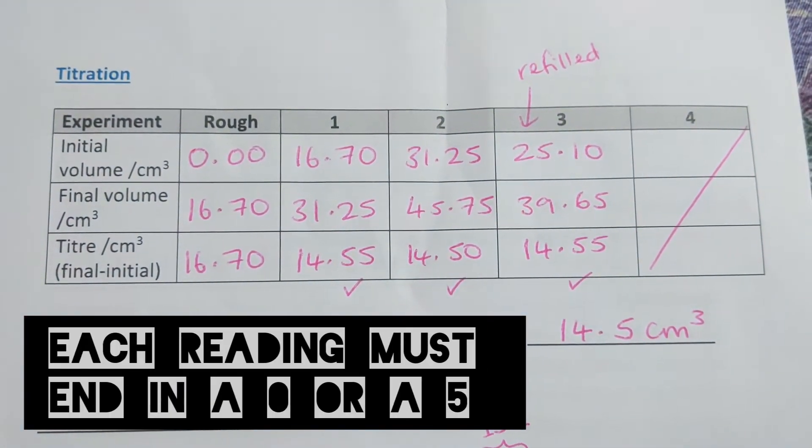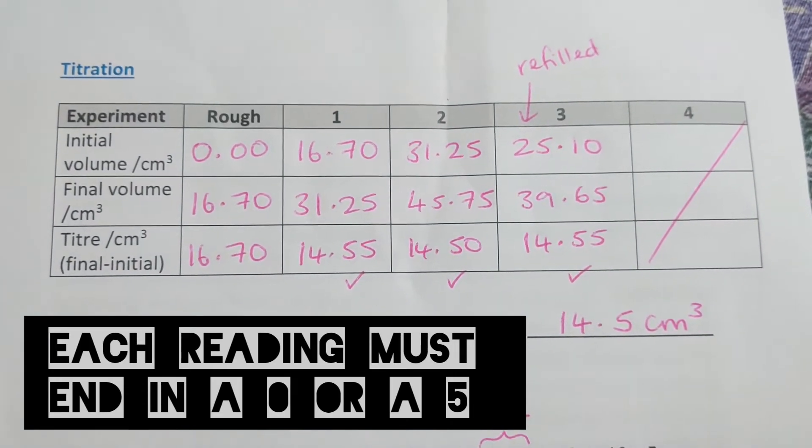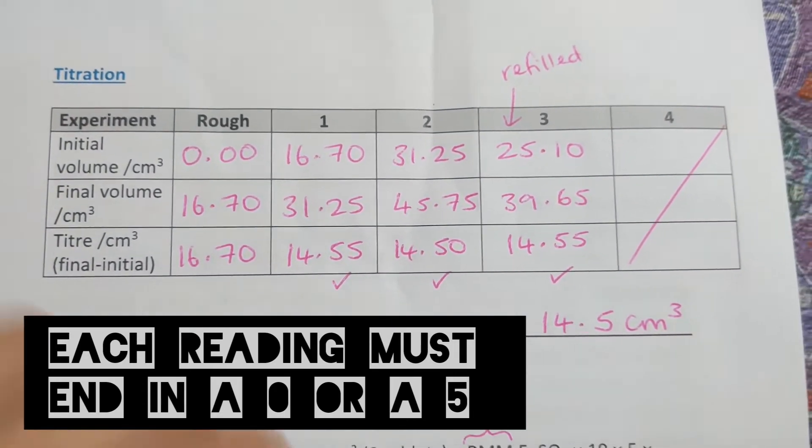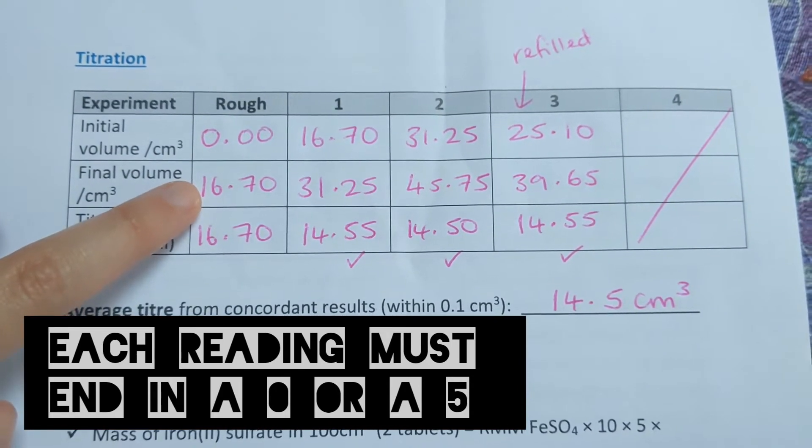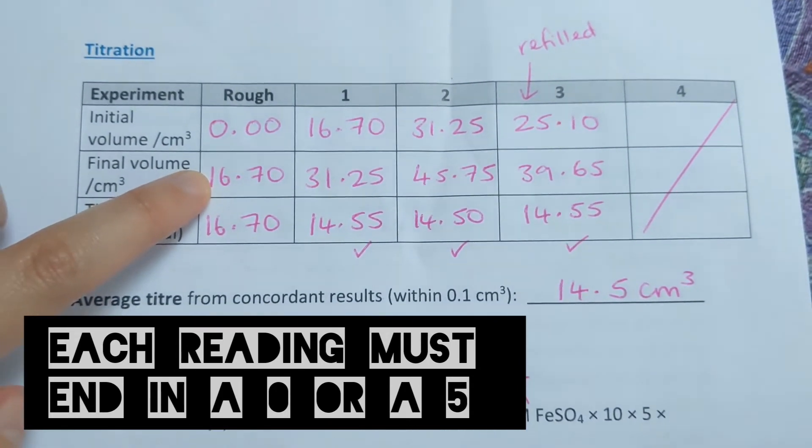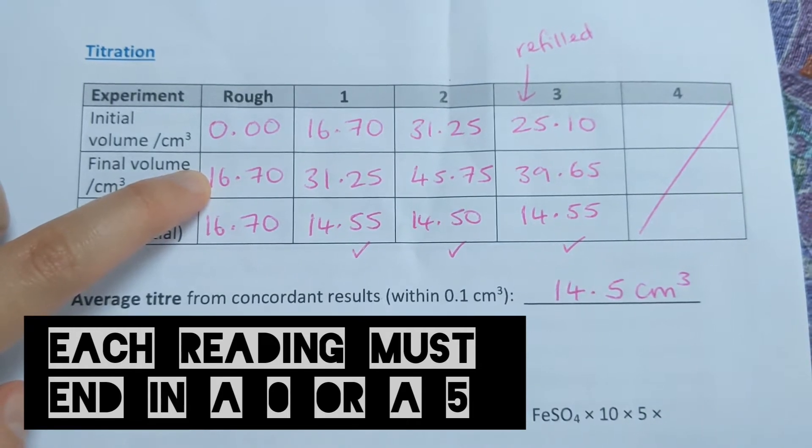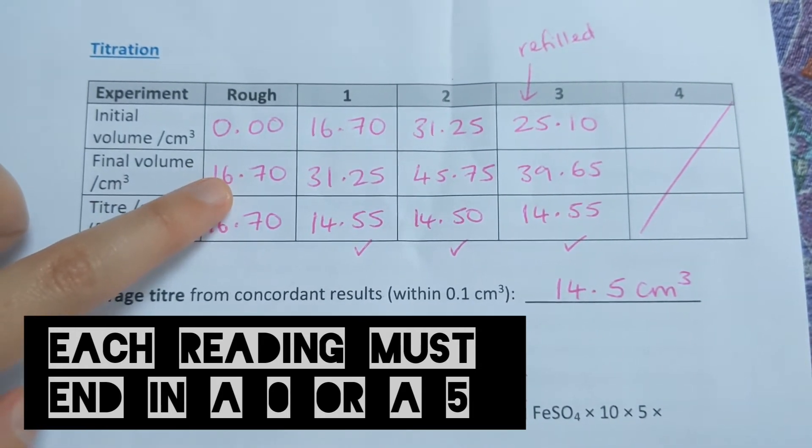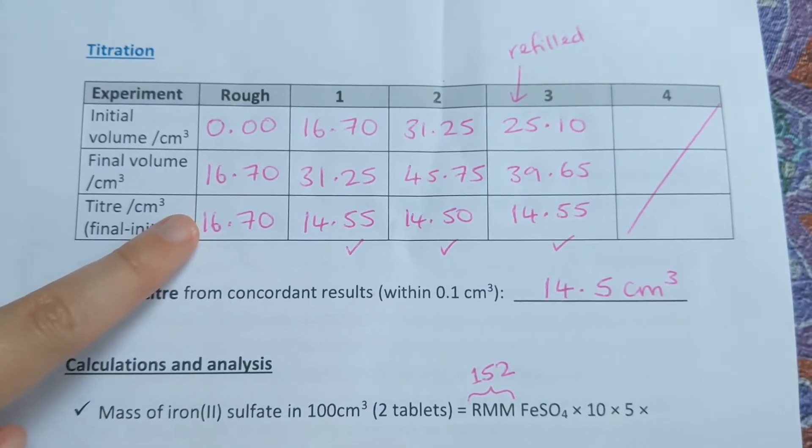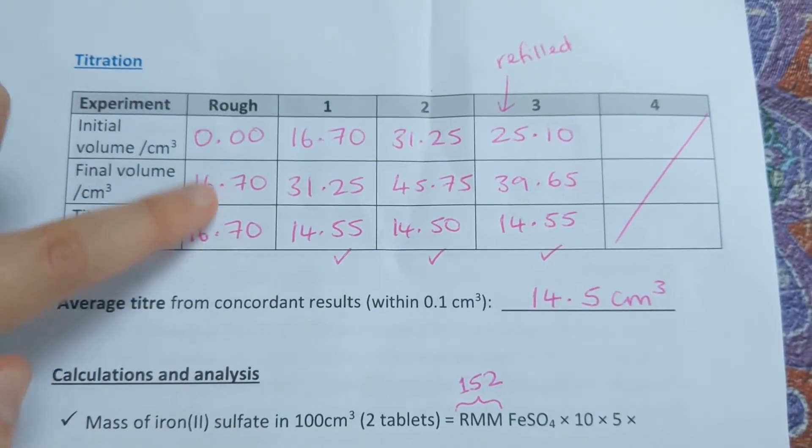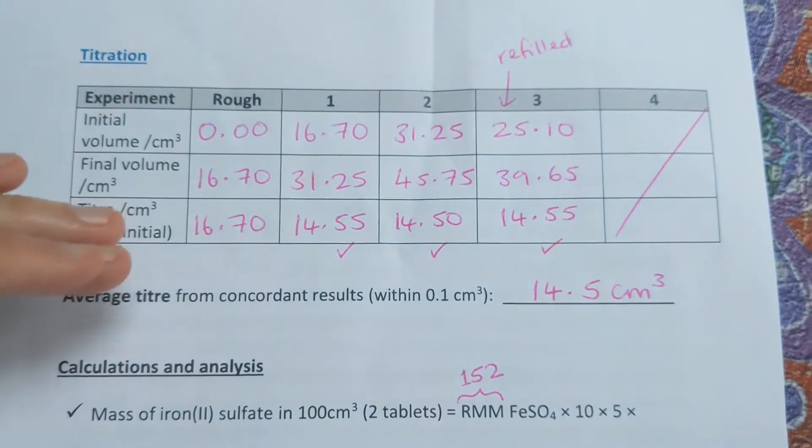We record our initial reading, do the titration, stop at the endpoint, record our final volume, and subtract final minus initial to get the difference, which we call the titer. Here's the rough one—it's okay to do that one quickly and overshoot the endpoint slightly to get a rough idea of where to stop.